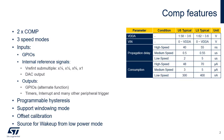Two comparators inside the STM32U5 microcontrollers provide a binary output, which indicates if the analog voltage on the positive input is larger than the voltage on the negative input. They allow the microcontrollers to react when the analog signal crosses a predefined threshold. The comparator continuously monitors voltage, in contrast to an analog-to-digital converter which operates in sampled mode.